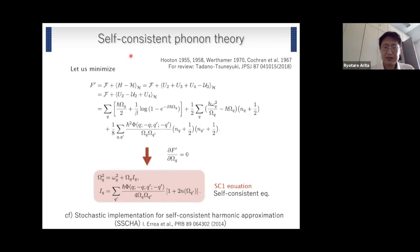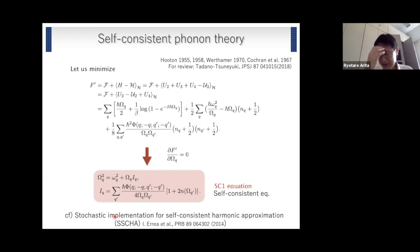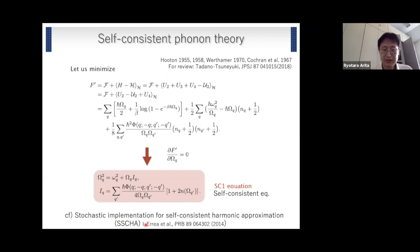This is the so-called SCP — self-consistent phonon theory. There is also another method to treat phonon anharmonicity called the stochastic implementation of self-consistent harmonic approximation (SSCHA). Recently, for lanthanum H10, we performed calculations using both SCP and SSCHA, and confirmed that both methods give almost the same results.